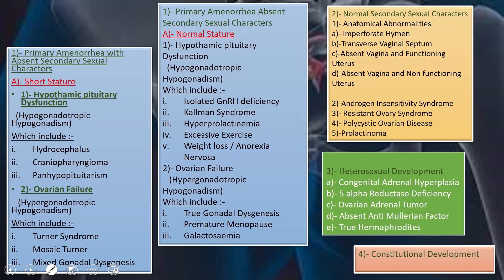Primary amenorrhea with absent secondary sexual characteristics is further divided into short stature and normal stature groups. In the short stature group, hypothalamic pituitary dysfunction (hypogonadotrophic hypogonadism) includes hydrocephalus, craniopharyngioma, and panhypopituitarism. Ovarian failure (hypergonadotrophic hypogonadism) includes Turner syndrome, mosaic Turner, and mixed gonadal dysgenesis.